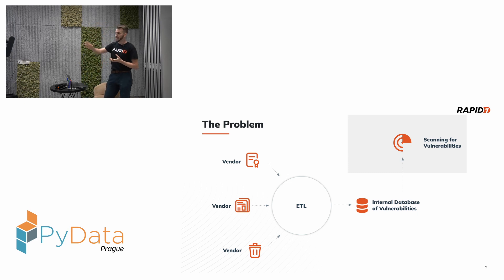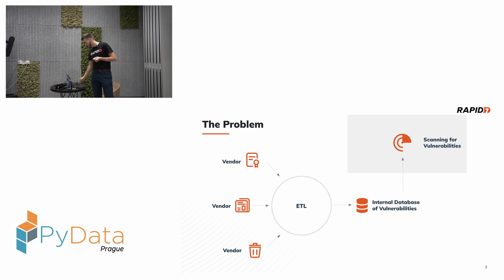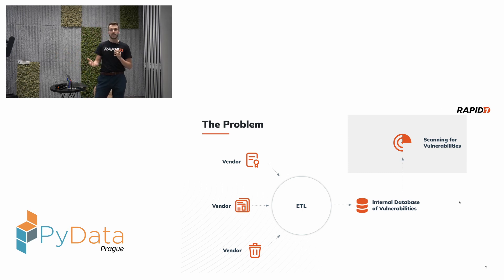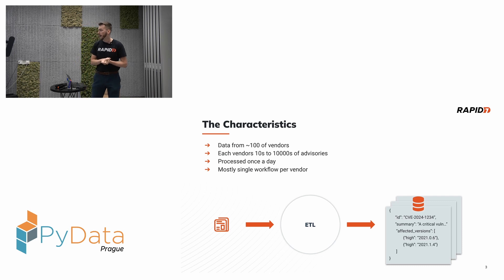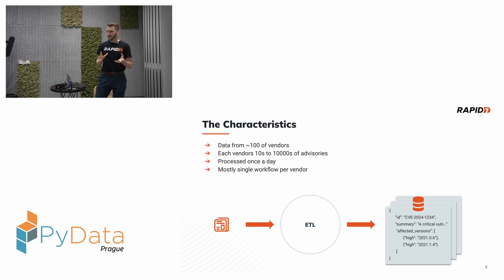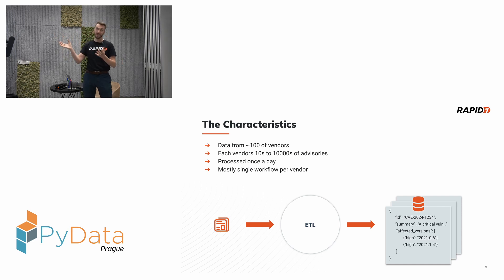I'll be talking about that ETL part and our journey to this low-tech ETL. We source around 100 vendors and download their data daily. The number of vulnerability advisories they publish varies a lot — it can be tens or ten thousands. The flow is simple: download, transform, store. Up until I joined the company, this was done quite naively — just a cron job running on a server on AWS.